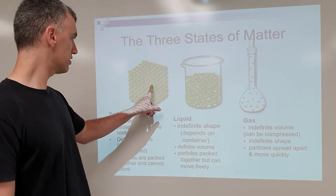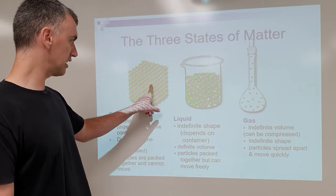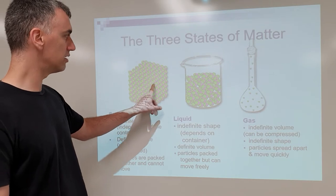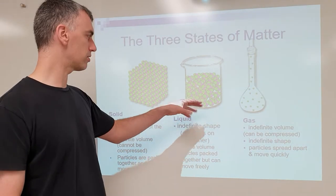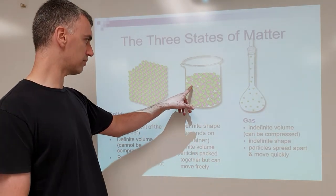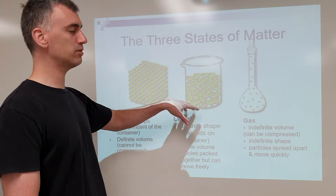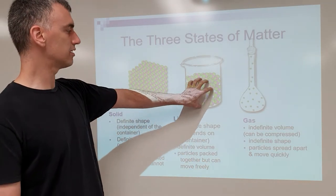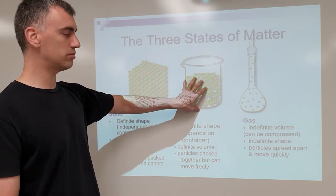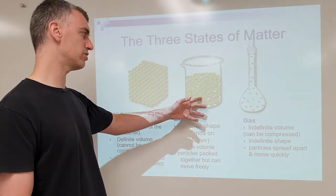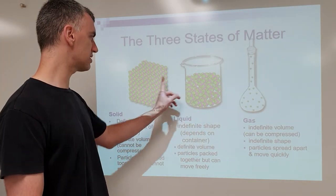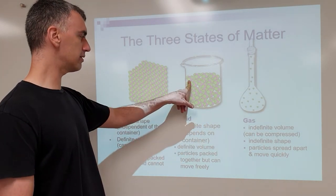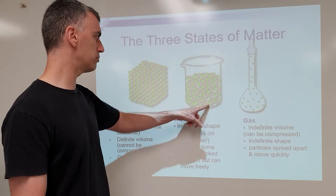The particles in a liquid are packed together but can move freely. Just like in a solid, there's not really much space between the particles. But unlike a solid where they're locked in place, in a liquid they're able to move around — there's no space between them, but they're vibrating and moving around freely rather than being fixed in one location.